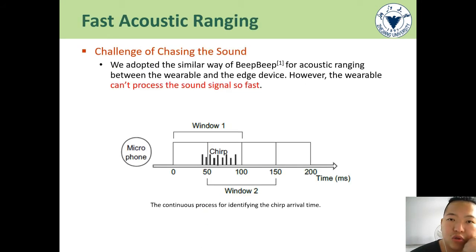LimbMotion utilizes the ranging method in BeepBeep. Two devices will send and receive chirps one by one. To compute the time of flight, it needs to do correlation calculation of the signal in the time window and the reference chirp. However, limited computing resources lead to chasing of the sound challenge, which means the slow processing speed causes accumulating time windows.